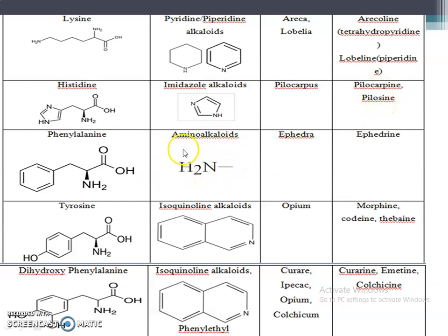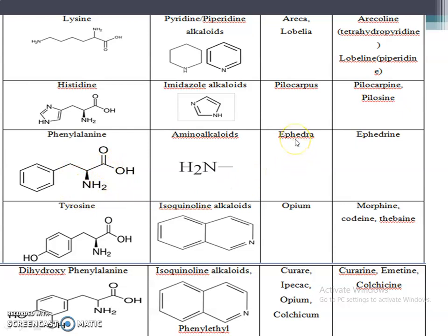Amino alkaloids, which come under proto or amino alkaloids, have the amine NH2 group. This amine group is present in the amino acid phenylalanine. The example is ephedra, which is an amino alkaloid, and ephedrine is obtained from the phenylalanine amino acid.